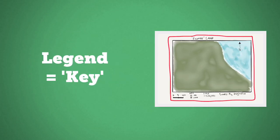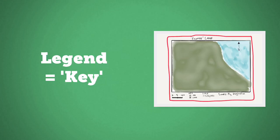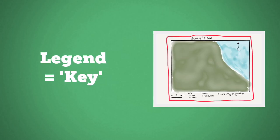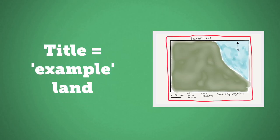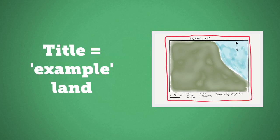The legend here is that key there with the little squares with blue showing sea and green showing land. The title is seen at the top, imaginatively 'Example Land'.